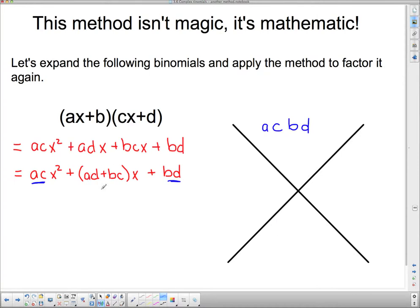And then we put these two things in the bottom, ad plus bc. Now in this case, the signs are the same, so we're looking for two things that multiply to acbd and add to ad plus bc. Well, that's pretty easy. If I'm going to add to ad plus bc, I need an ad and a bc. And signs are the same, and they're both positive. That's what it says there, so we need pluses here.